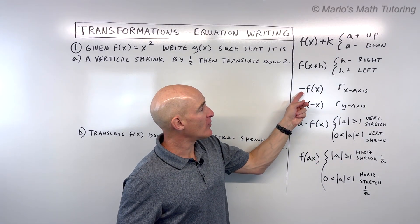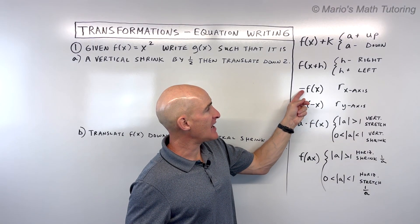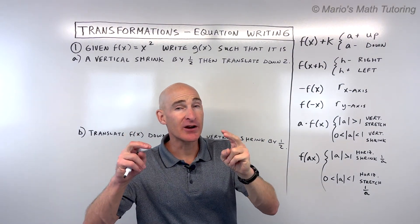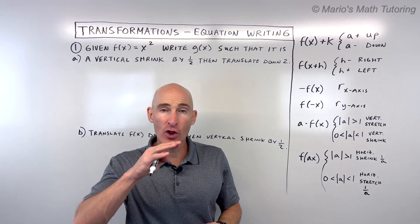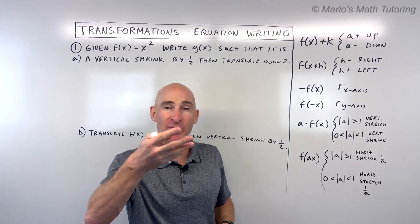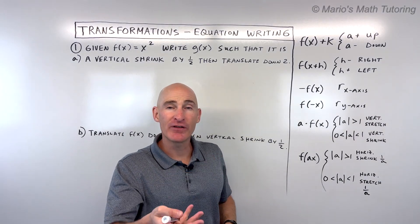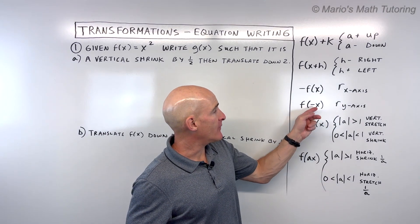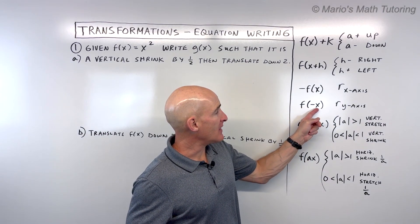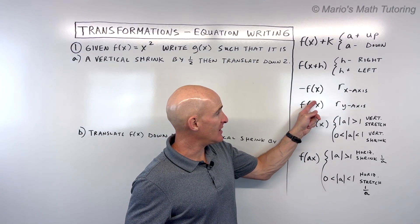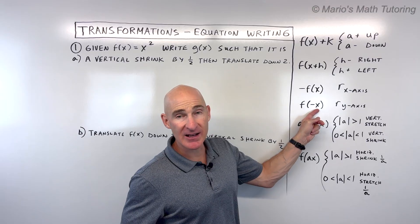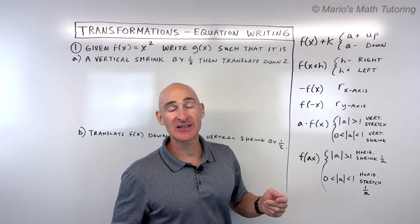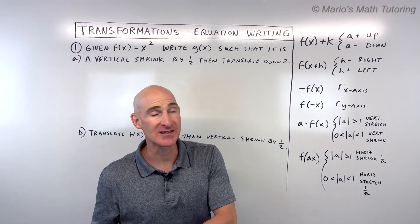Now let's look at negative f of x. This negative is like multiplying by negative one. F of x is like our y values. If you multiply those y values by negative one, that's going to reflect the graph over the x-axis. If you multiply the x values by negative one — see how the negative is grouped with the x — that's going to make the x values the opposite sign, and that's going to reflect it over the y-axis.